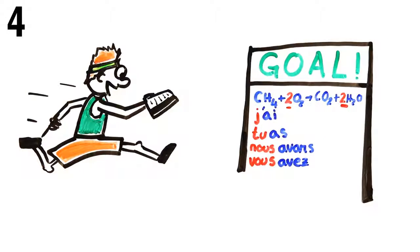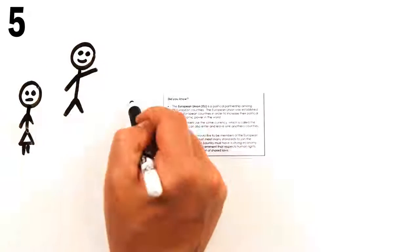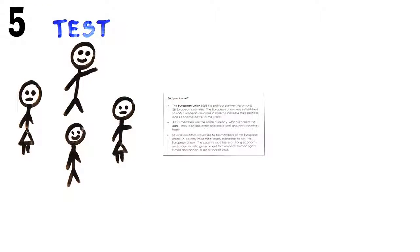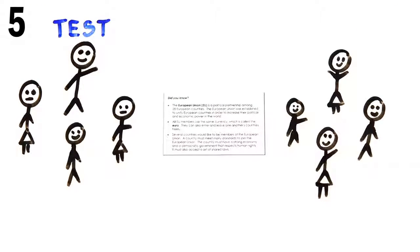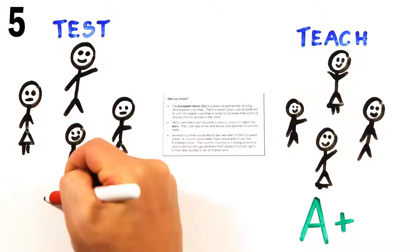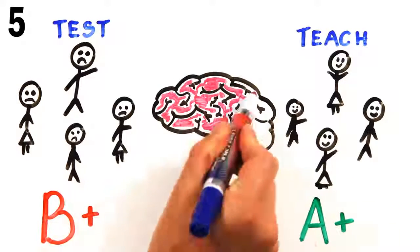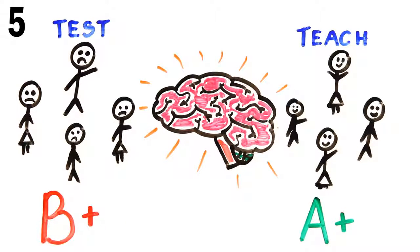If you can't explain it simply, then you don't understand it well enough. In studies where individuals were asked to learn a passage, and then half were told that they would be tested on the material while the other half were told they would have to teach it to other students, participants expecting to teach it did much better at understanding the main points. When you're expecting to teach, your brain organizes the information in a more logical, coherent structure.